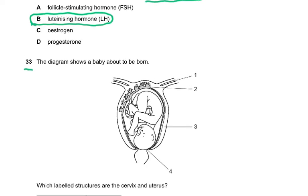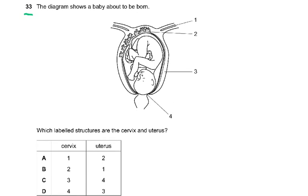Question 33: The diagram shows a baby about to be born. Which labelled structures are the cervix and the uterus? The cervix is label four — it is the opening of the uterus, which remains contracted until just before birth, when it dilates to allow the baby's head to pass through. The uterus is label three — this is the wall of the uterus.